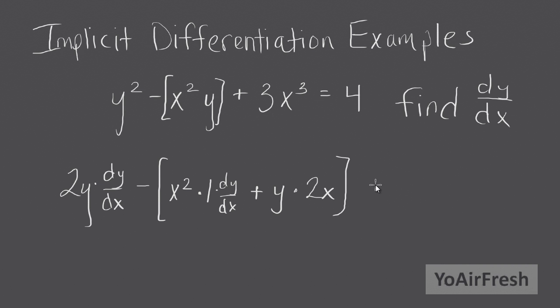And what's next here? So we've got 3x cubed, derivative of that, 9x squared equals, and the derivative of any constant equals 0.